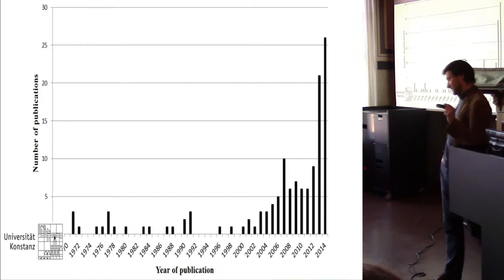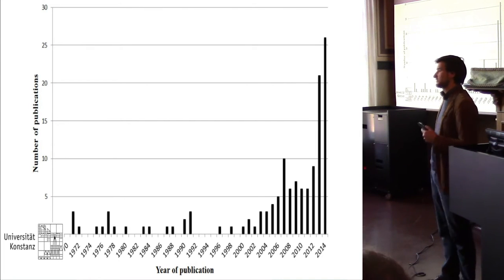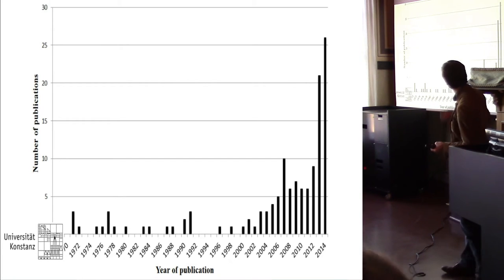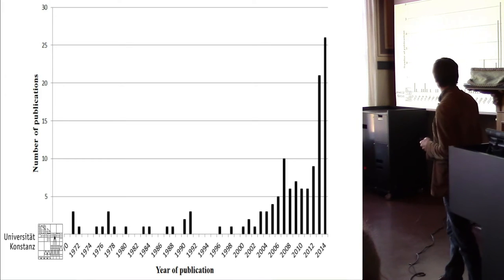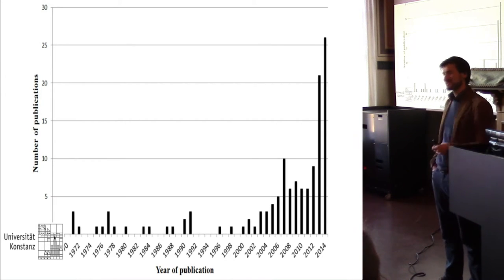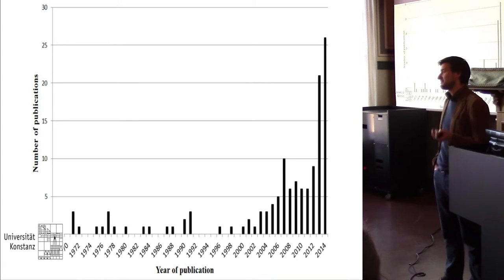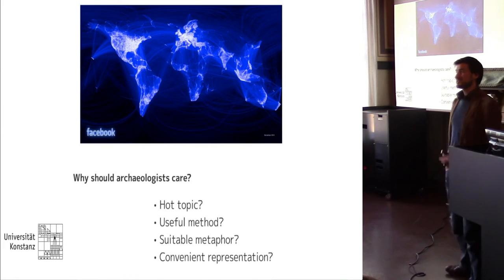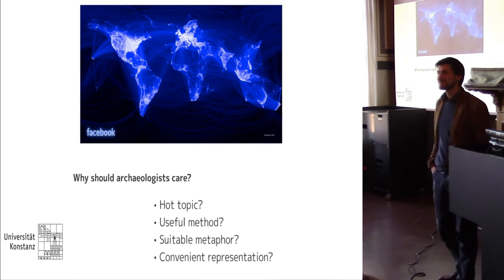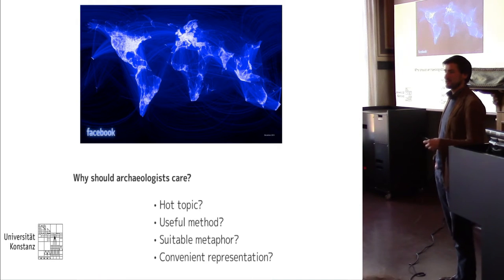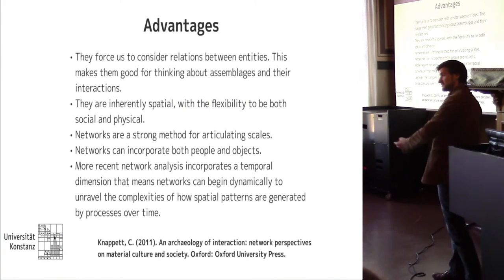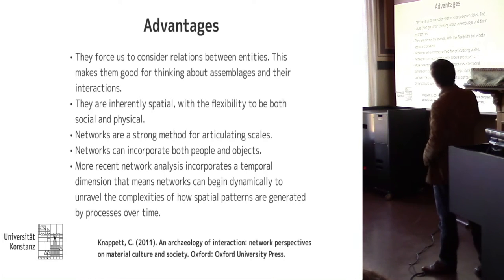A histogram of formal applications of network science in archaeology shows activity since the 1970s but very infrequently, with a real spike only in the last decade. This correlates with sessions, papers, and research funding devoted to archaeological network science. But just because something is a hot topic doesn't mean we should do it — that is not a sufficient motivation. Maybe it's useful because it allows us to do things other methods don't.